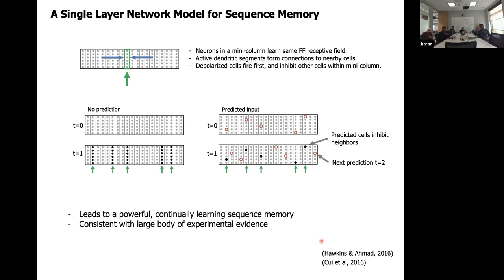This is a powerful, continually-learning sequence memory. When you give it streaming data, it can learn to pick up on patterns in that data. It can actually pick up higher-order temporal patterns — it automatically learns to use context from far back in time that is predictive of the current input.